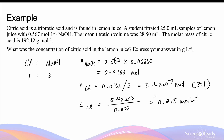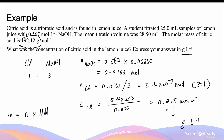This is the concentration of citric acid in lemon juice. However, the question wants us to express the answer in grams per litre. We need to convert the moles per litre into grams per litre by finding out how many grams of citric acid are in 0.215 moles. The mass of citric acid equals the moles multiplied by the molar mass of 192.12 g/mol. Multiplying 0.215 by 192.12 yields 41.4 grams per litre, leaving this in three significant figures.